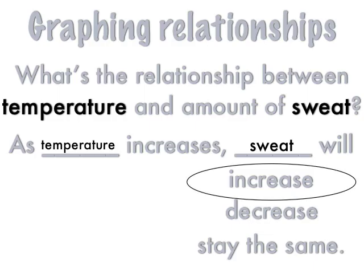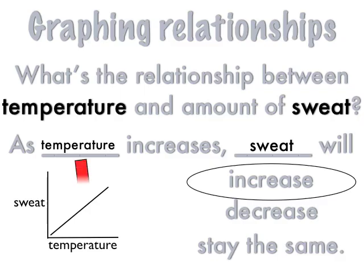Now, there's a way you can graph that relationship. It looks like this. Temperature on the bottom, sweat on the side, and an uphill line. Now how do you know what word goes on the bottom? Well, in the sentence, the first word that you say gets written on the bottom of a relationship graph. So temperature on the bottom, sweat on the side.